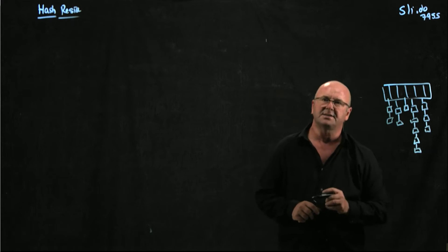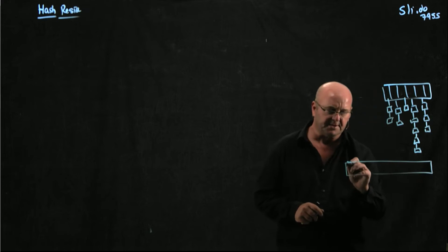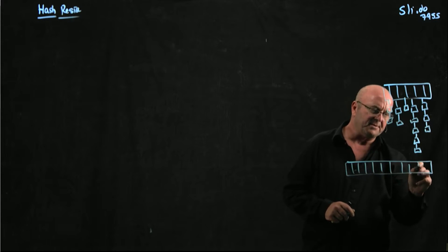The way that we avoid that is when the hash starts getting full we make a much bigger array, let's say twice the size, and we move everything over.